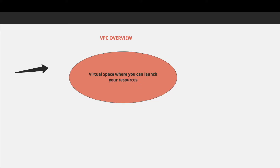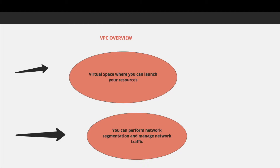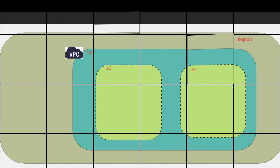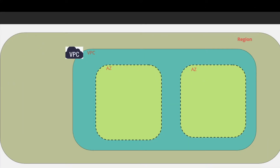VPC is a virtual space where you can launch your resources, perform network segmentation, and manage network traffic. You can launch a VPC in an AWS region, which is a geographical area. You can create your VPC in any AWS region, and an AWS region can have one or more availability zones.